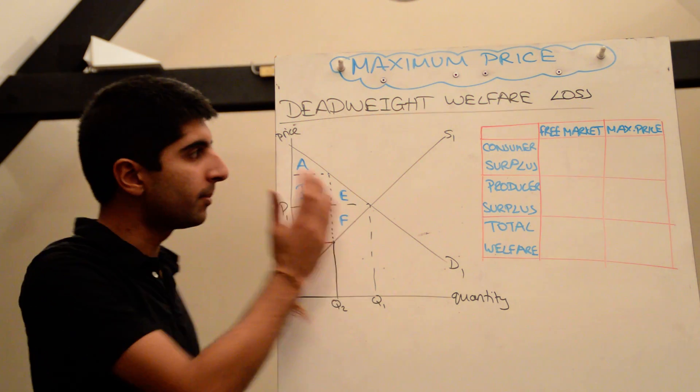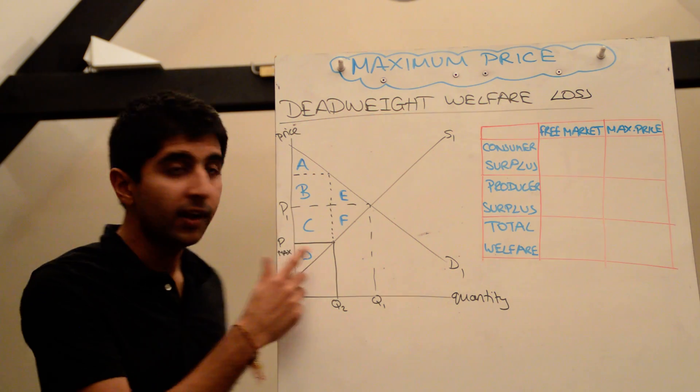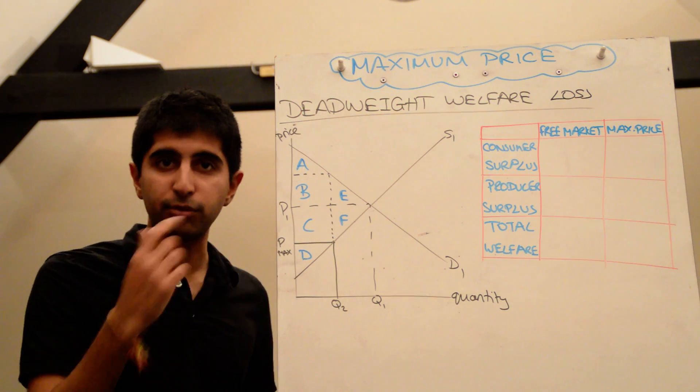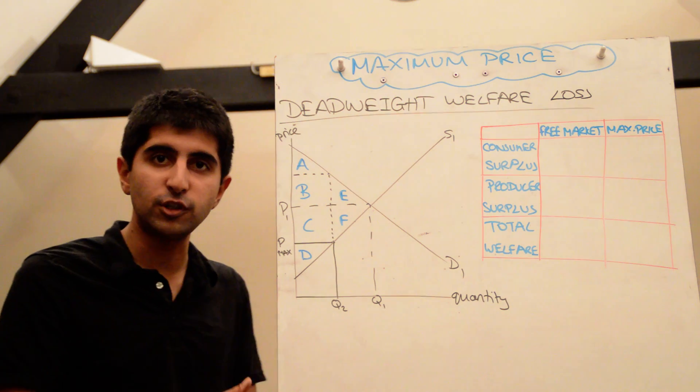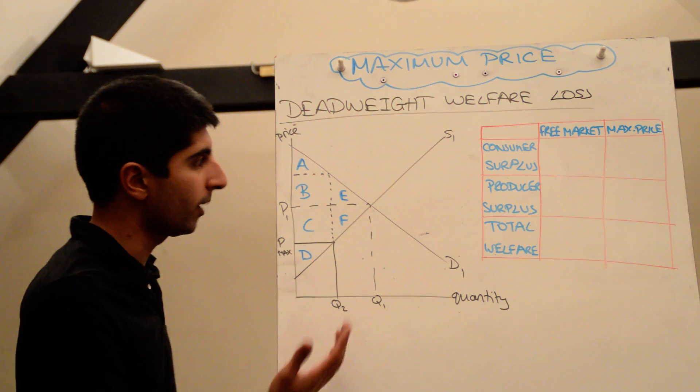I've drawn a diagram here of the free market with demand and supply, where they equal, we have a price and quantity. I've also shown the impact of the maximum price, and what I've focused on is the actual production which takes place at Q2—that's the amount that's being produced and sold. We're only worrying about that quantity, nothing else, to show surplus effects.